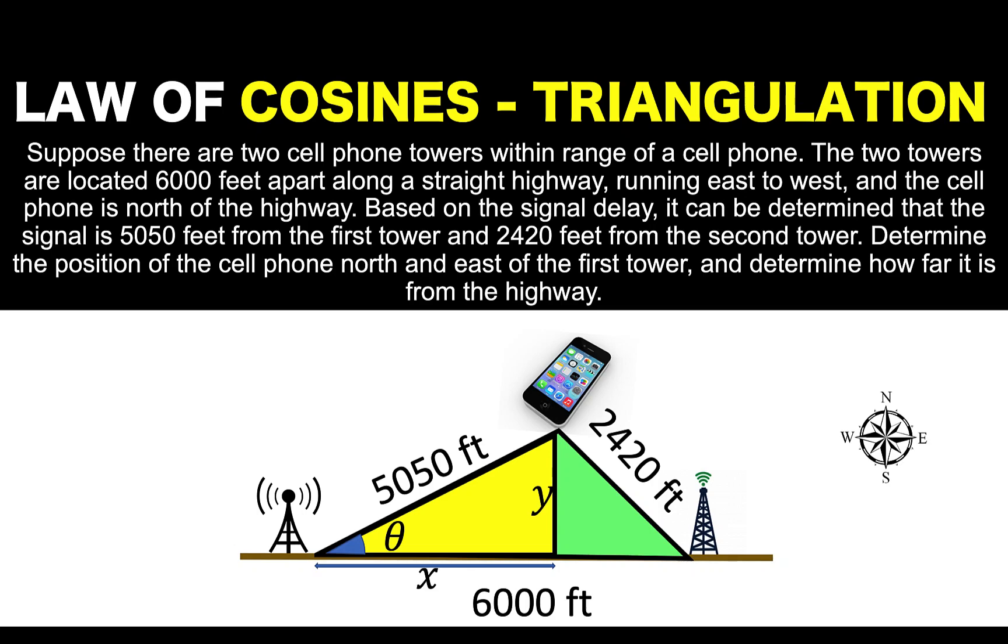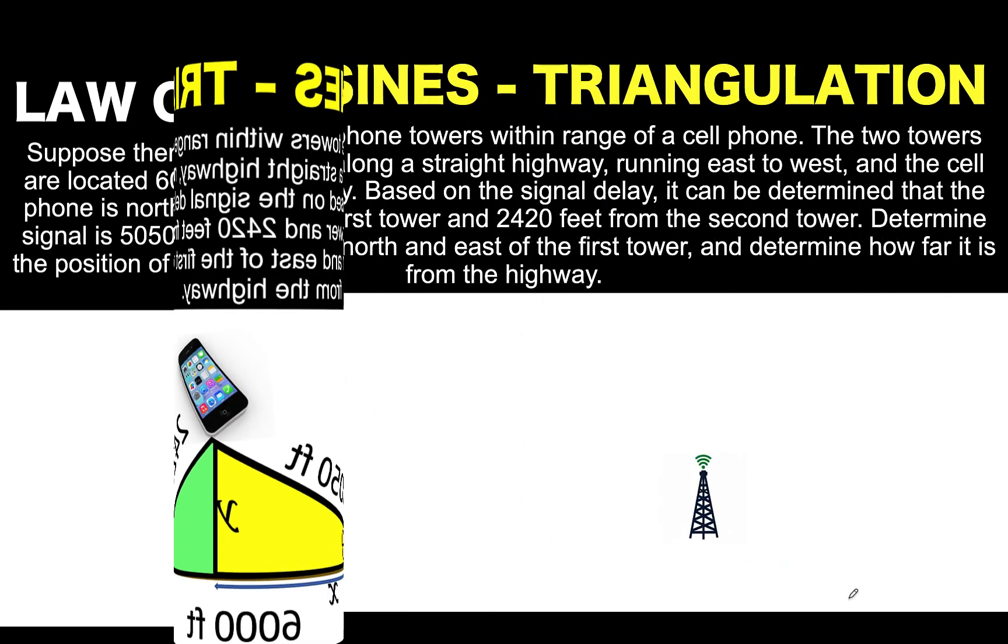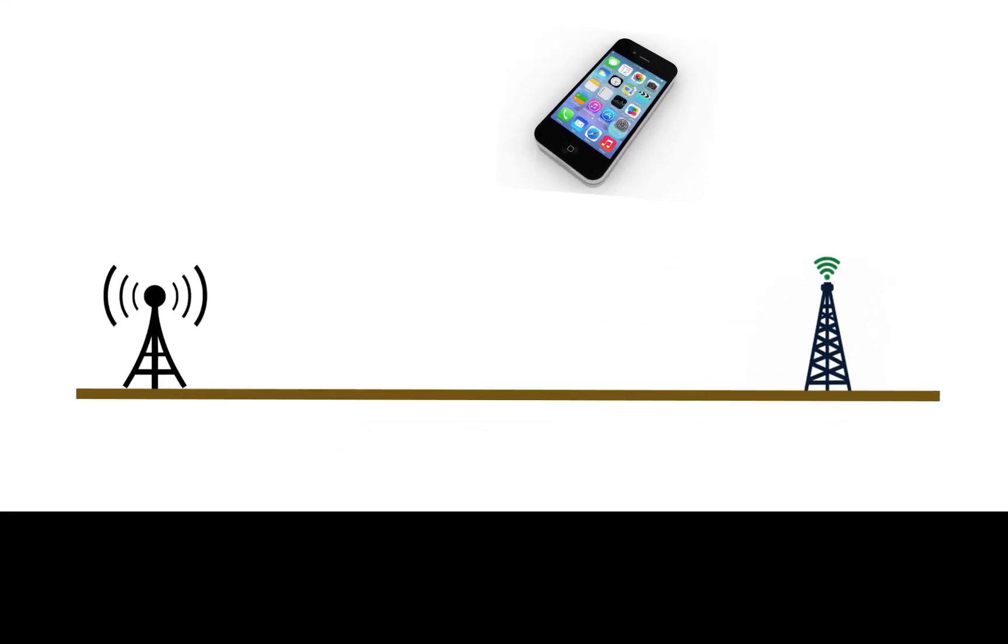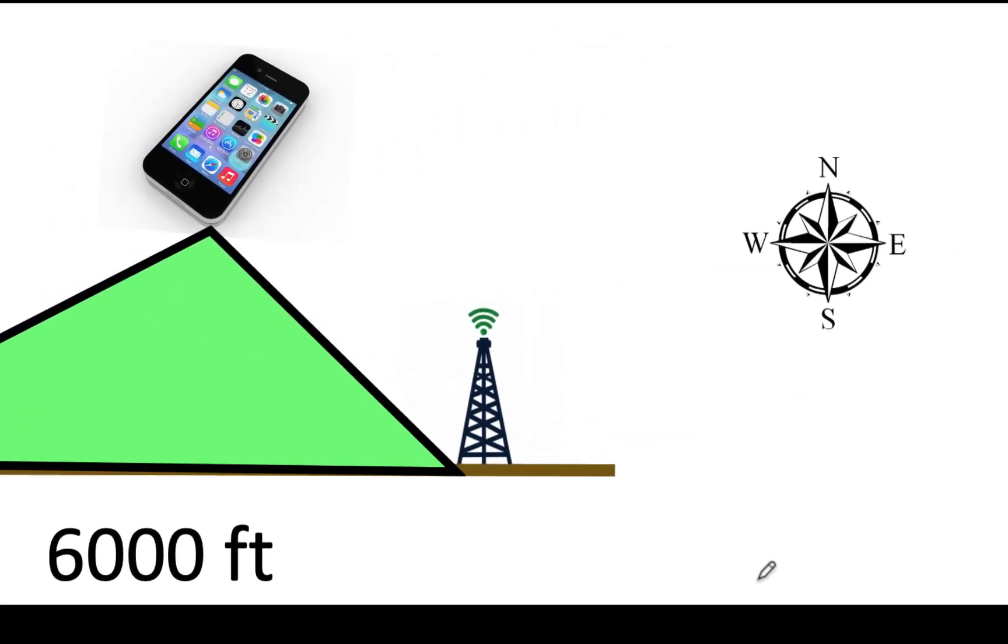Hey everyone, here is our math problem for today. Suppose there are two cell phone towers within range of a cell phone. The two towers are located 6,000 feet apart along a straight highway running east to west, and the cell phone is north of the highway.